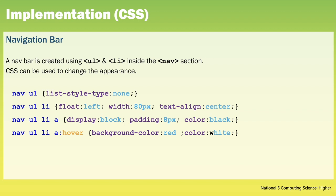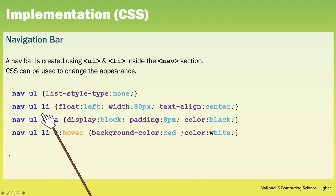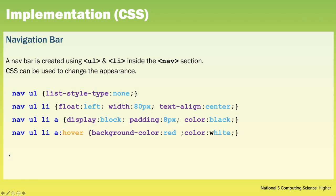A nav bar is created using ul and li tags inside the nav section. CSS can be used to change the appearance using descendant selectors. For example this rule here will only modify the unordered list within the nav section, and this rule will only modify the li item within the ul within the nav section. It is worth making sure that you know how this code works and how you can edit it.